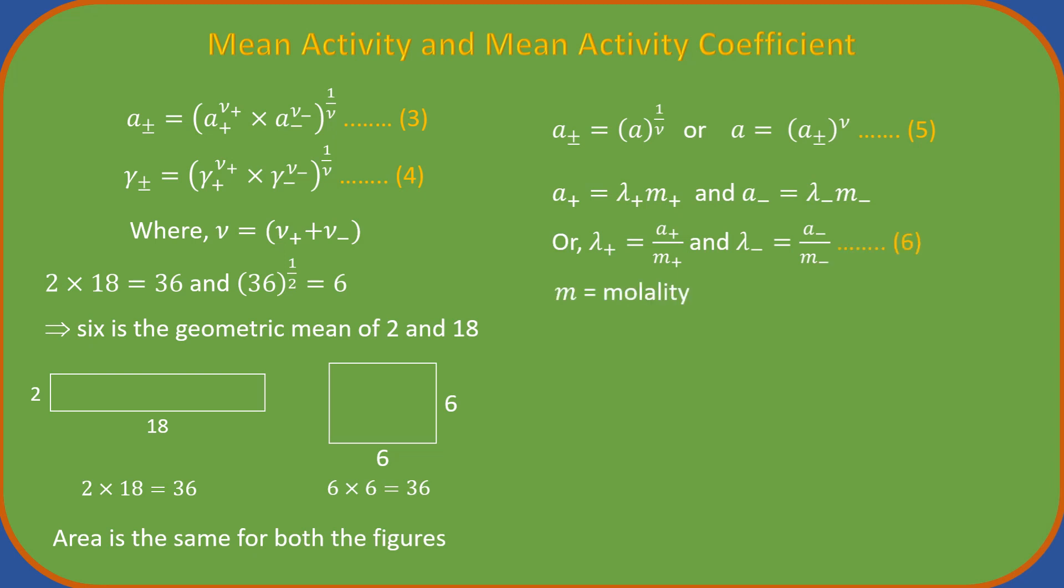Substituting these expressions for gamma plus and gamma minus in equation 4, we get. Equation 7 gives an expression for mean activity coefficient. Now, carefully watch the following steps leading to final equation for calculating activity.